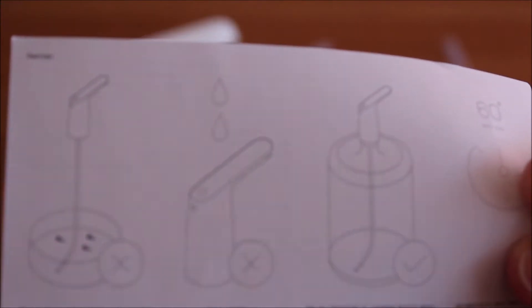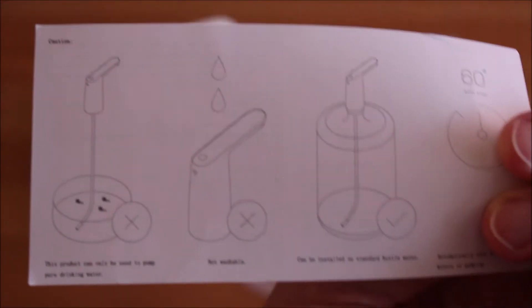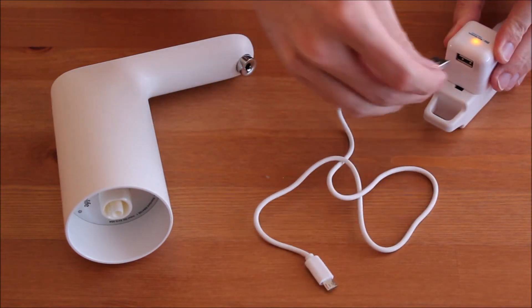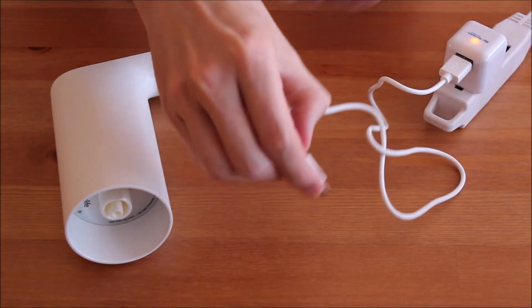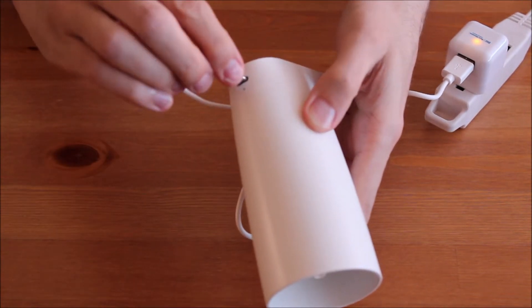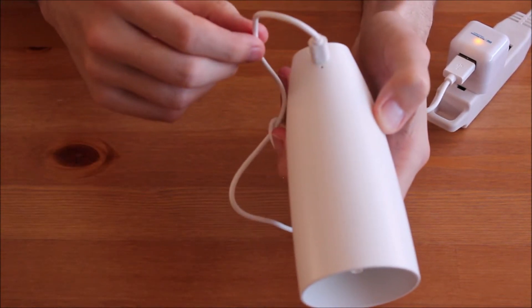The water bottle pump comes with a short instruction manual. First, I fully charge the battery. Charging time is about 4 to 5 hours and the battery lasts for about 4 to 5 5-gallon water bottles.